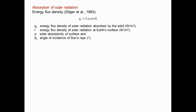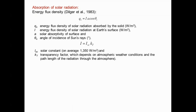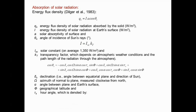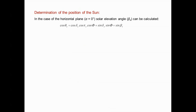The energy flux density of solar radiation absorbed by the solid is the product of the energy flux density of solar radiation at Earth's surface — which is the product of the solar constant and the transparency factor — the solar absorptivity of the surface, and the cosine of the angle of incidence of the sun's rays. The angle of incidence depends on the declination of the sun, azimuth of normal to the plane, angle between the plane and Earth's surface, geographical latitude, and the hour angle. For a horizontal plane, the equation simplifies and the solar elevation angle can be calculated.